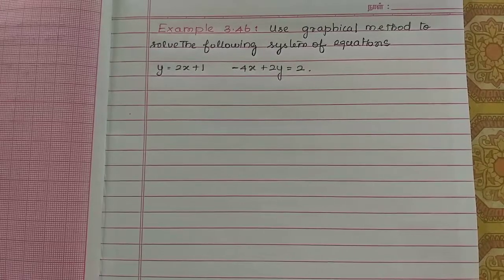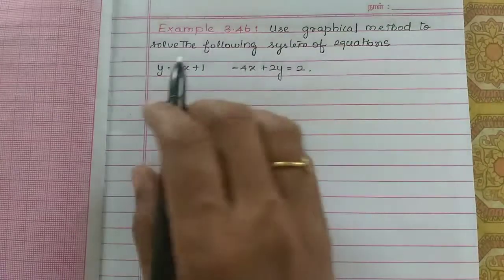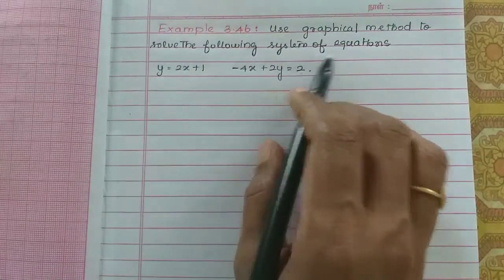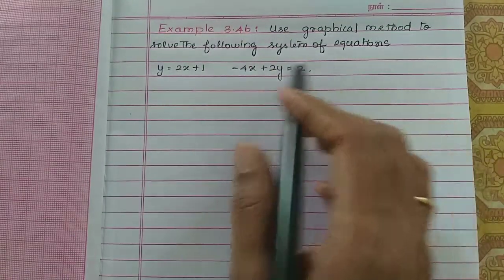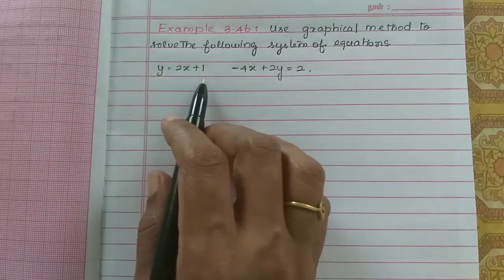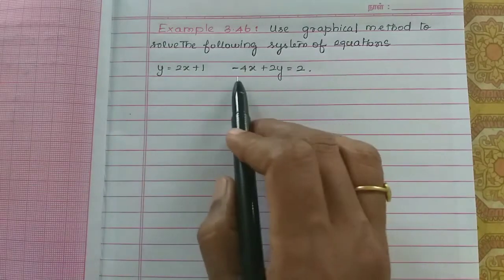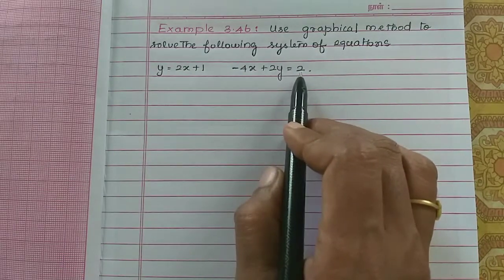Hi students. In this video we will see example 3.46: use the graphical method to solve the following system of equations, which is y equals 2x plus 1, and minus 4x plus 2y equals 2.